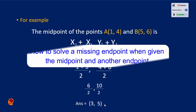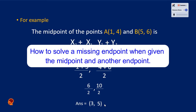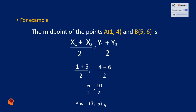Now, how does one solve for a missing endpoint when given the midpoint and another endpoint? I'm going to solve it with another question which will explain vividly how to find the missing endpoint when given a midpoint and another endpoint.